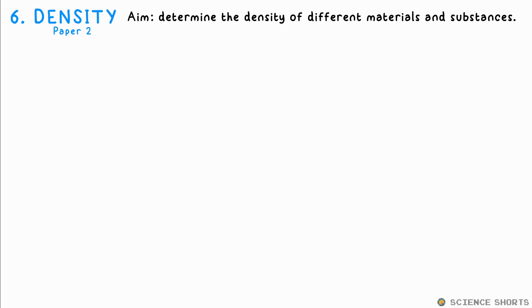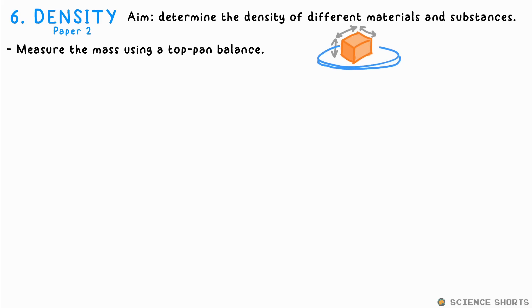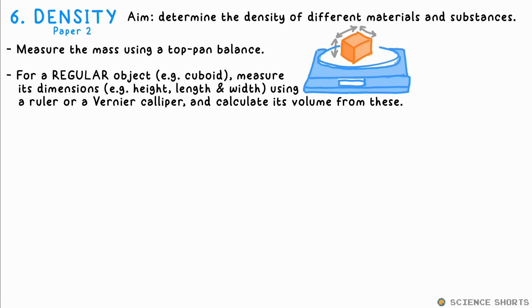Physics six, density. This one often crops up in exam questions, finding the density of objects or solutions. To find the mass of any solid object, just place it on a top pan balance. If it's a regular object, say a cuboid or a cylinder, you can measure its dimensions with a ruler or vernier calipers that has a higher resolution and calculate its volume from these. Then use the equation mass divided by volume to find the density.